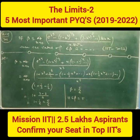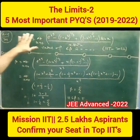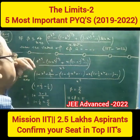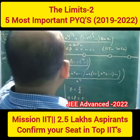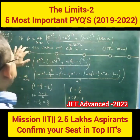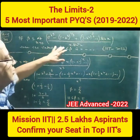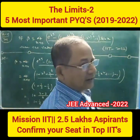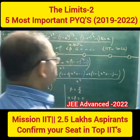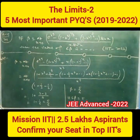Now, if beta is equal to this limit x tends to 0 of e to the power x cube minus of this, by x sin square x, then the value of 6 beta is this. This is an IIT 2022 question.